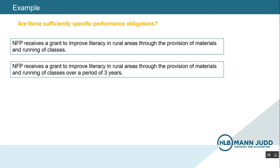Next, an NFP receives a grant to improve literacy in rural areas through the provision of materials and running of classes over a period of three years. The difference here is that we now have a time frame. Does that make it sufficiently specific? Again, in my opinion, it doesn't. A time frame alone is not enough to make a performance obligation sufficiently specific.